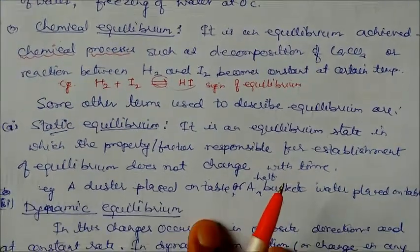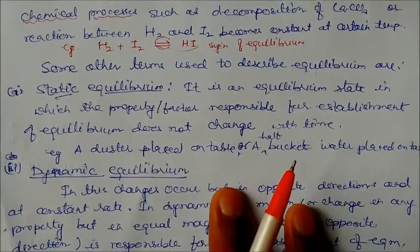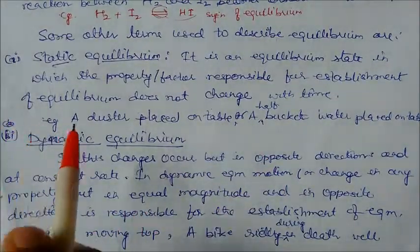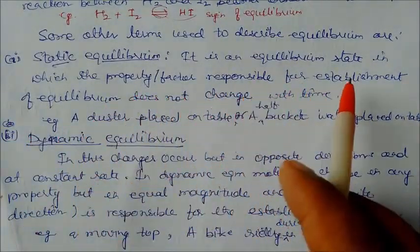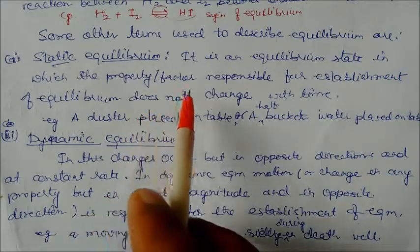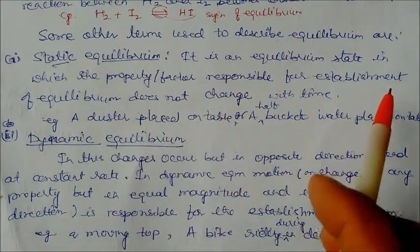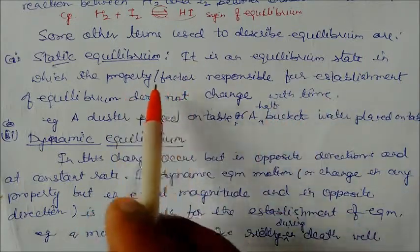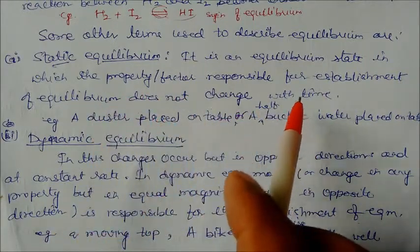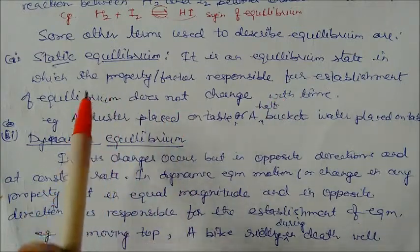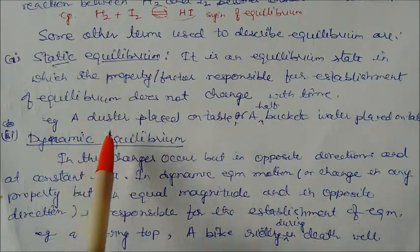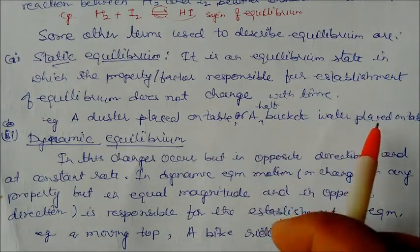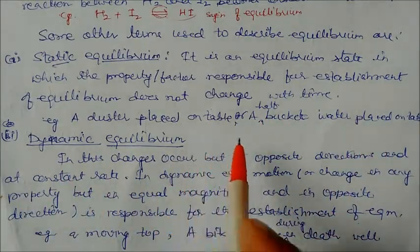There are some other terms used to describe equilibrium. One is static equilibrium, which we have already seen. It is an equilibrium state in which the property or factor responsible for establishing equilibrium does not change with time. For example, a duster placed on a table or a half-filled bucket of water placed on a table — this is static equilibrium.